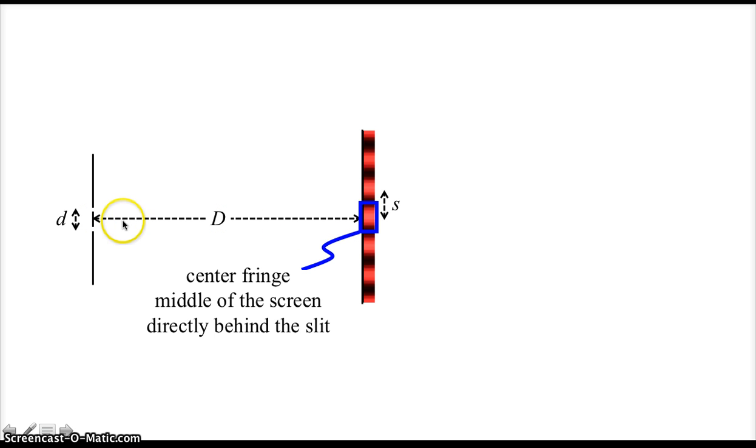Sometimes it's called directly behind the slits, so this is directly behind the slits. And sometimes it's called the central maximum, or the central intensity maximum, because the graph is really high right there.